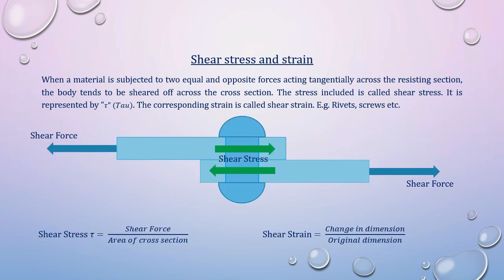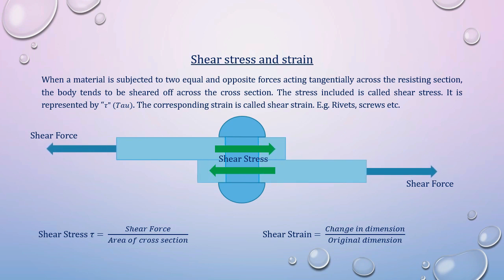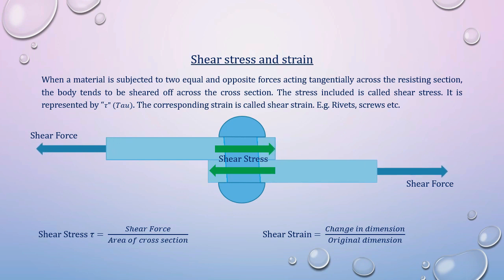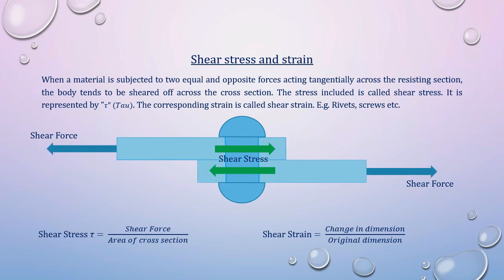In this case, shear force is applied tangentially. The shear stress equals shear force divided by area of cross-section. The shear strain is the change in direction divided by the original dimension.